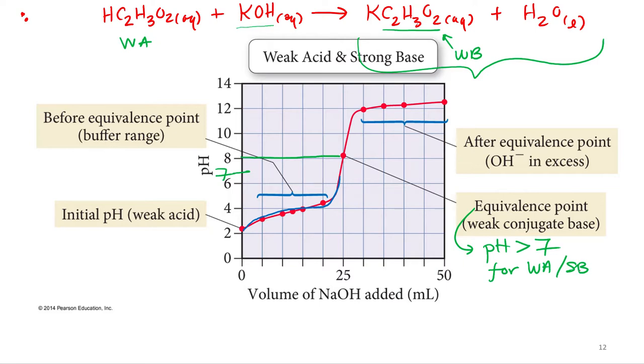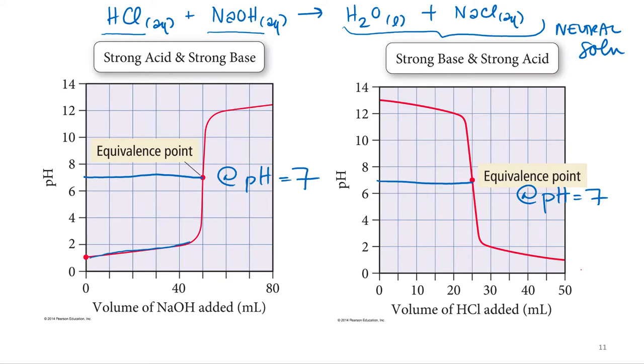So the strong base, because of the reciprocal nature of the conjugates, remember the stronger the acid, the weaker the base. So if you have a strong acid and a strong base, they're going to make a neutral solution. So that's why this was always pH 7. They're always going to be neutral.